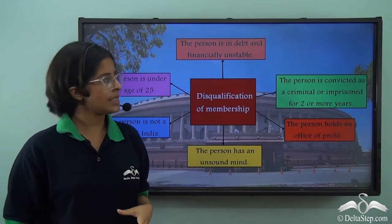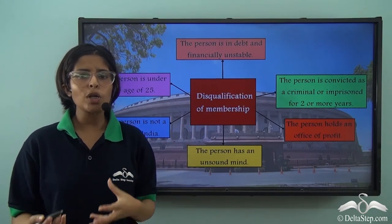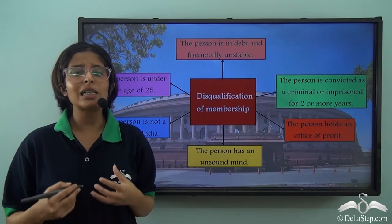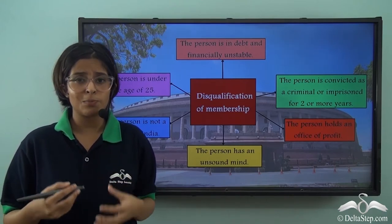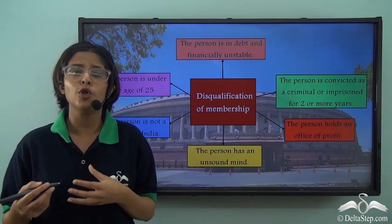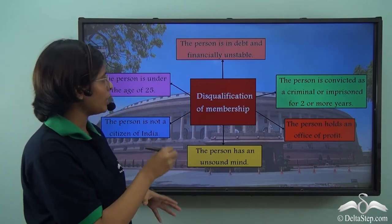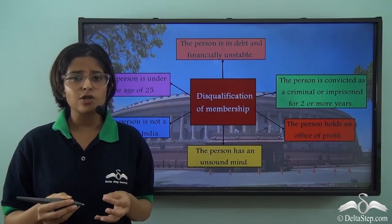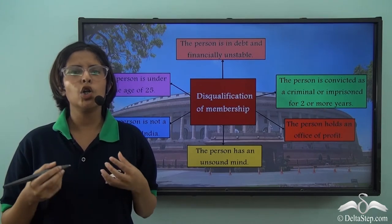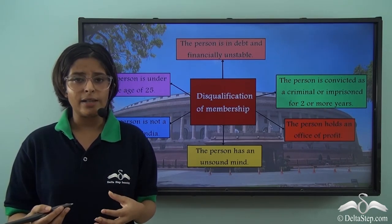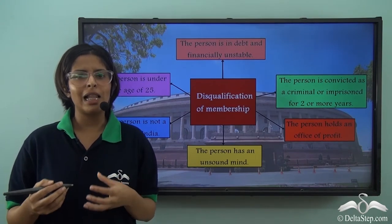The last disqualification is being in debt and financially unstable. If someone owes money or has not cleared their bills, they are not a responsible person and will be disqualified. Now that we have learnt the disqualifications, we know the legislature of India is a parliament and the members of parliament are elected directly through direct elections.